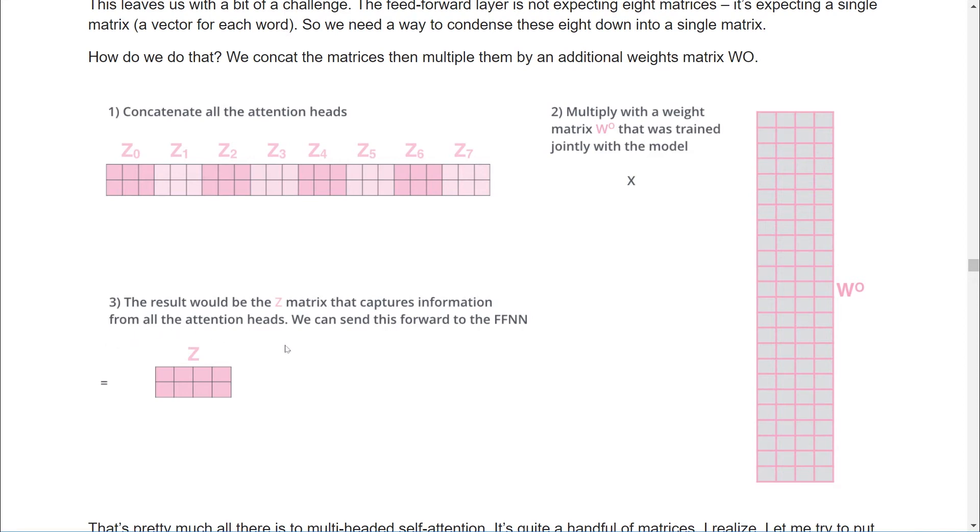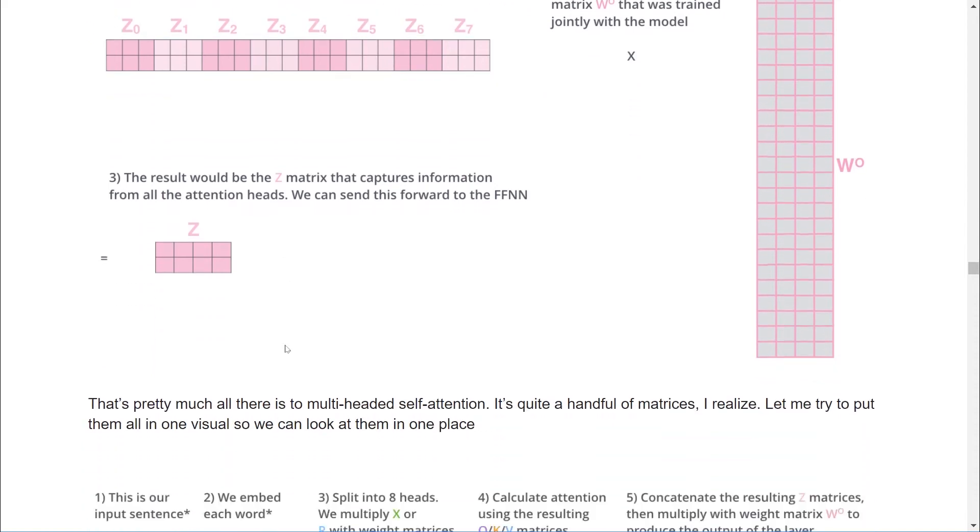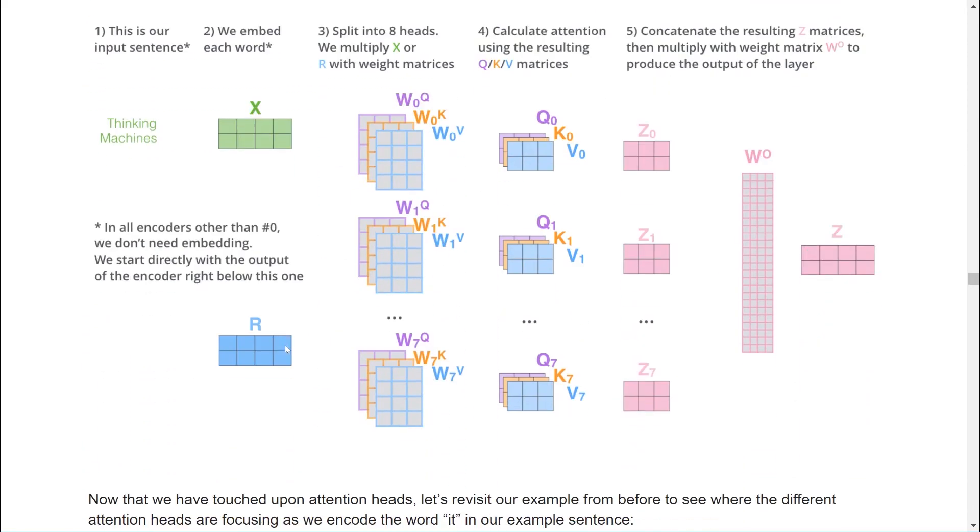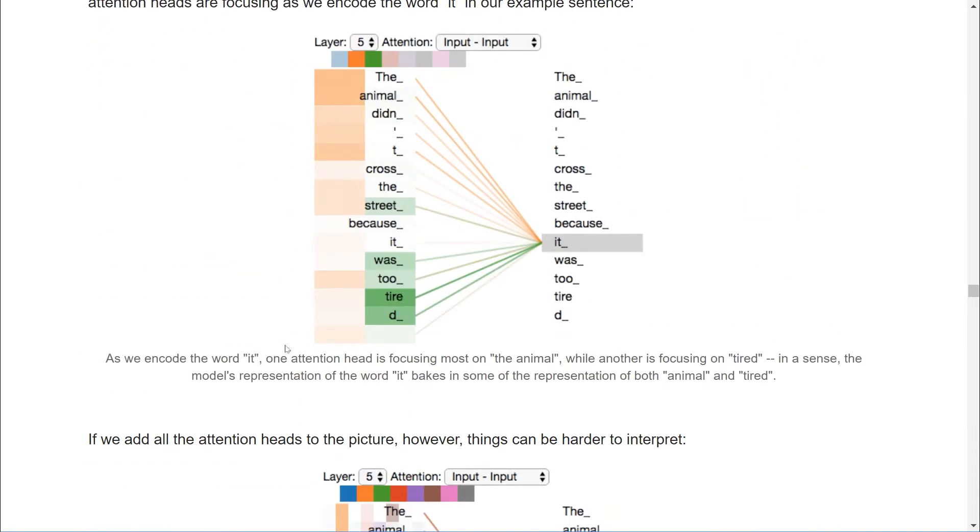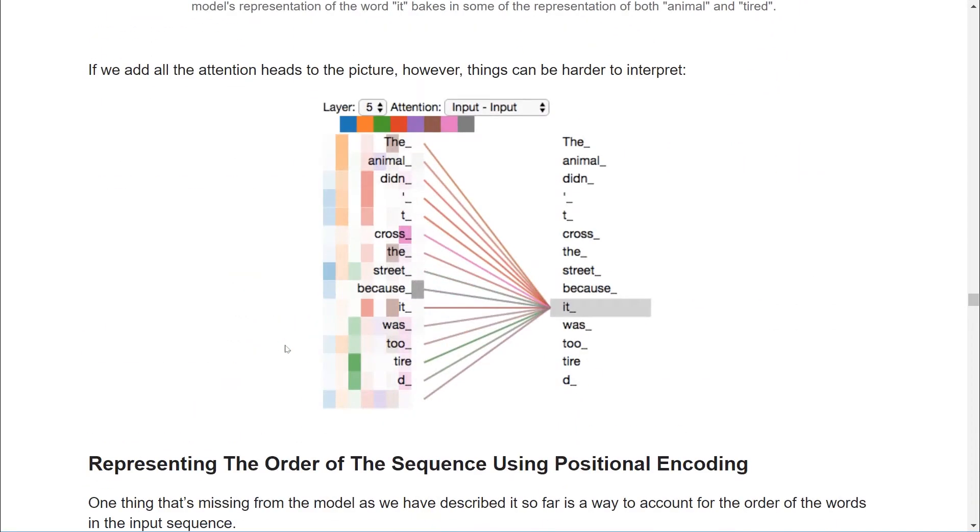The output from the multi-head attention then flows through a simple feed-forward network. This consists of two layers of fully connected neurons, input size 512, hidden layer 2048, and output size 512 according to the paper.